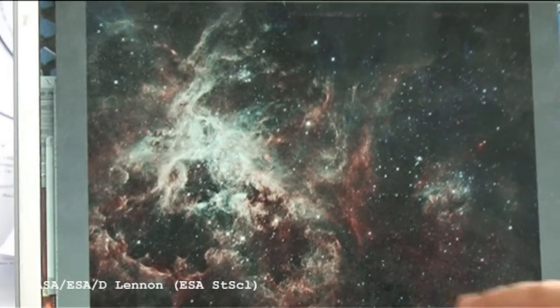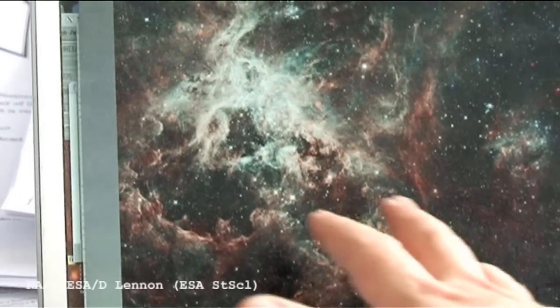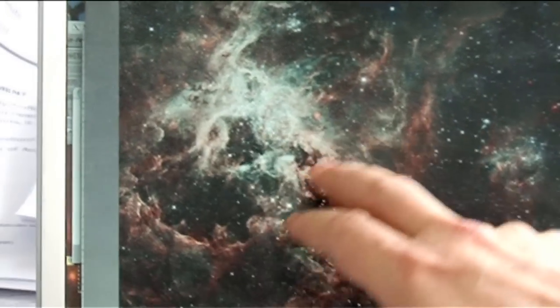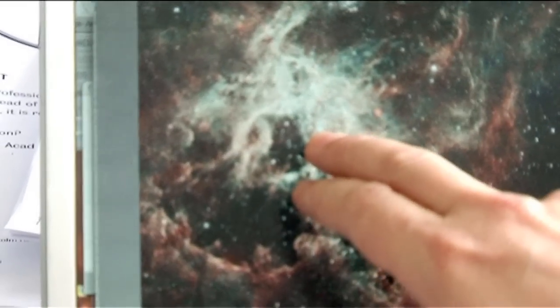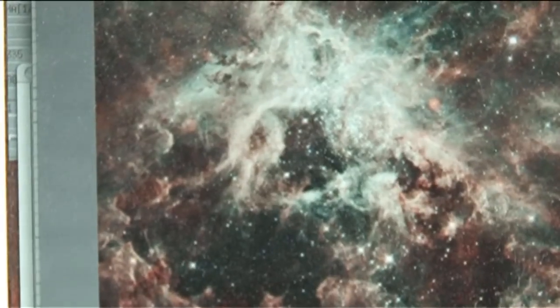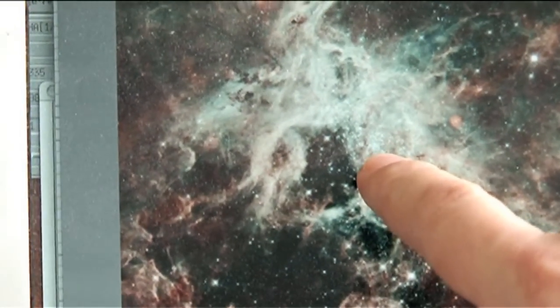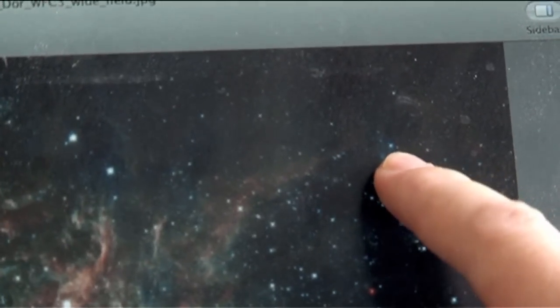So this is a wide field view with a combination of telescopes in Chile and the Hubble telescope of the Tarantula Nebula, which gives you a feel for why it's got its name. So this is the main region of the Tarantula. The central cluster is over here, and the one that we think was kicked out from our survey was this little blue thing here.